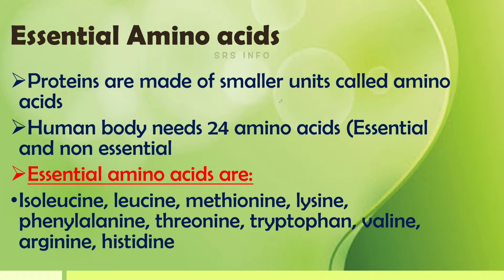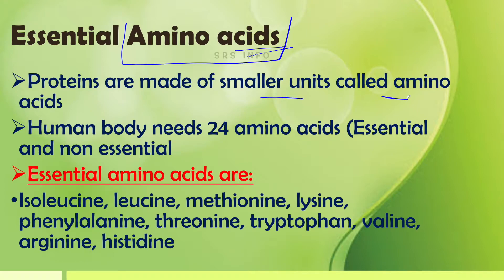Now, essential amino acids. Proteins are made of smaller units called amino acids. The human body needs 24 amino acids, which fall under essential and non-essential categories.